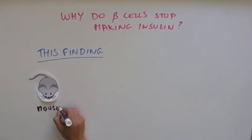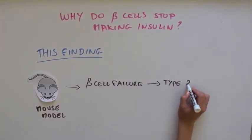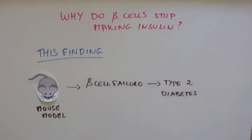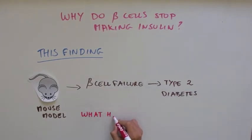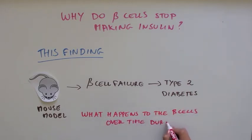In this paper, the authors are using a mouse model of type 2 diabetes that develops beta cell failure. What the authors did is looked at what happens to the beta cells over time when a mouse experiences beta cell failure.